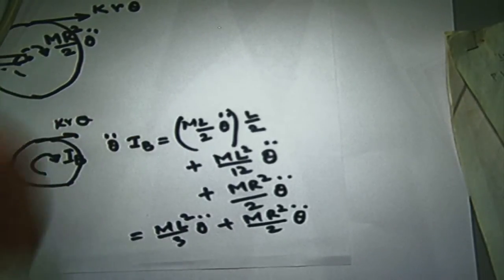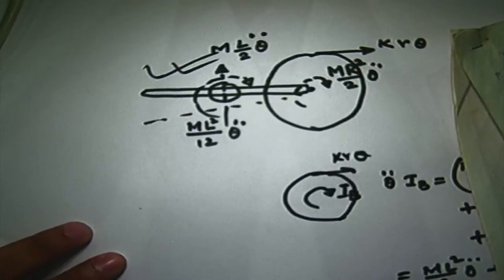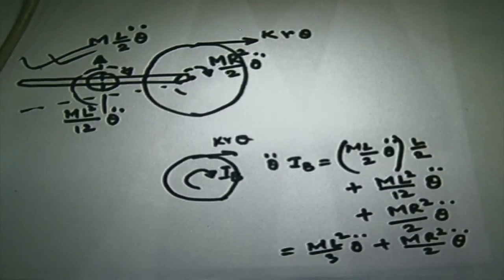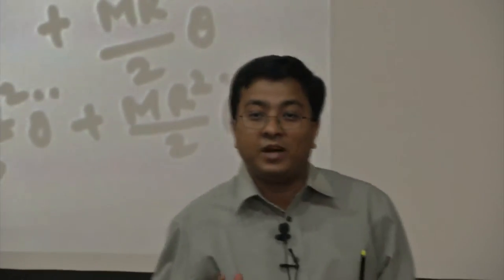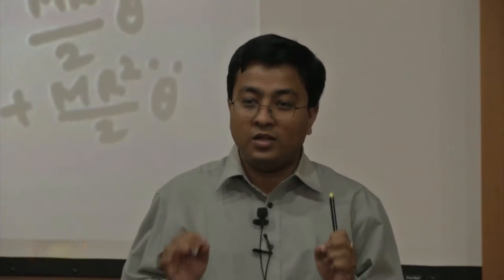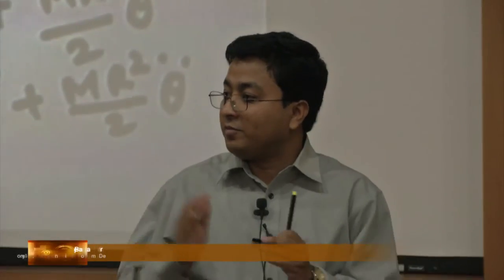We can show it this way also, but it is always better to go through this mode because this is the right approach from the beginning. The approach is very simple — you can connect this with virtual work. All I am doing is giving it a small displacement and finding the displacement at various points. In virtual work you are just computing the work done; here I am taking a moment. You can also solve this using virtual work, as we have seen.